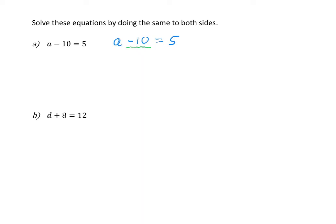So if I add 10 to the left side and then add 10 to the right-hand side to keep it balanced, my equation becomes a is equal to 5 plus 10, so a is equal to 15. I have worked out my value for a by isolating a on the left-hand side, and everything I've done to isolate a, I've also done to the right-hand side.